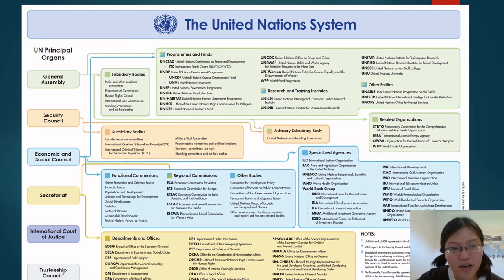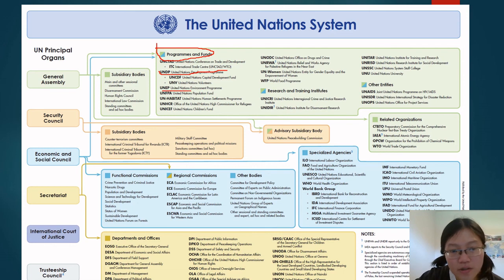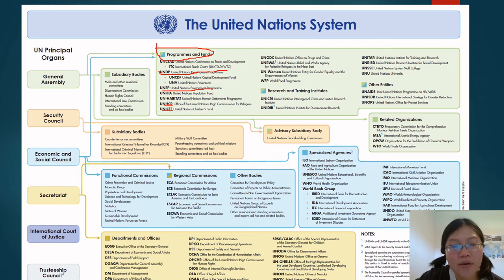This is the United Nations system. Those most involved in development assistance are the Programs and Funds. Here you have UNDP — the United Nations Development Programme — a really major development actor which sets the Human Development Index, coordinates the Sustainable Development Goals, and previously the Millennium Development Goals. You also have UNEP — United Nations Environment Programme — and others that work on refugees, and UNICEF that works on children.